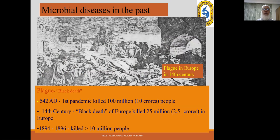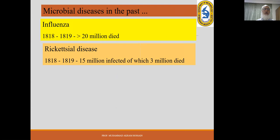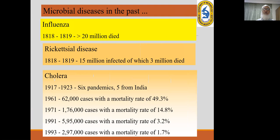Plague in the 14th century killed about 25 million in Europe. And from 1894 to 1896, in just two years, 10 million people were killed by plague. Influenza killed more than 20 million in the pandemic of 1918-1919. Rickettsial disease caused 3 million deaths with 50 million infected. Cholera has caused many pandemics, of which five originated from India.